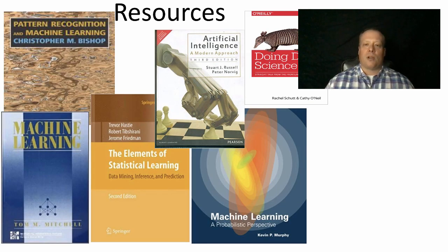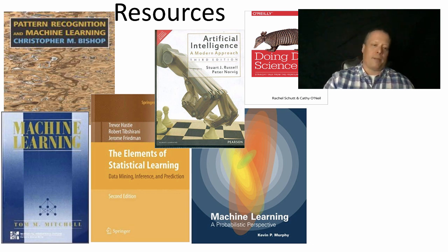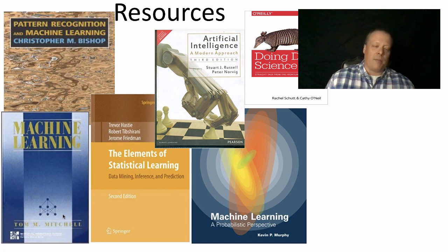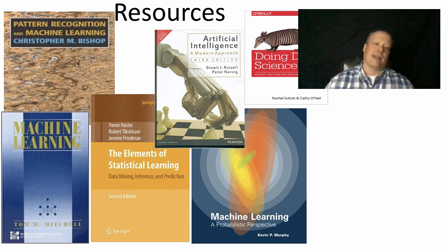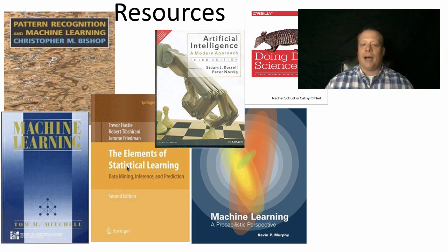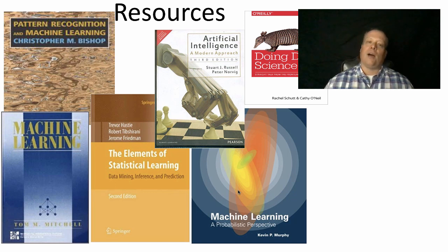To wrap up, I want to mention some resources. There are a lot of materials out there that you might look at. The machine learning book in the bottom left corner — the blue one by Mitchell — is the book I basically learned a lot of my machine learning from and has been around for quite a while. The Pattern Recognition and Machine Learning book came out shortly after. Elements of Statistical Learning became popular in the early 2000s, and Machine Learning: A Probabilistic Perspective is one of the more recent additions.